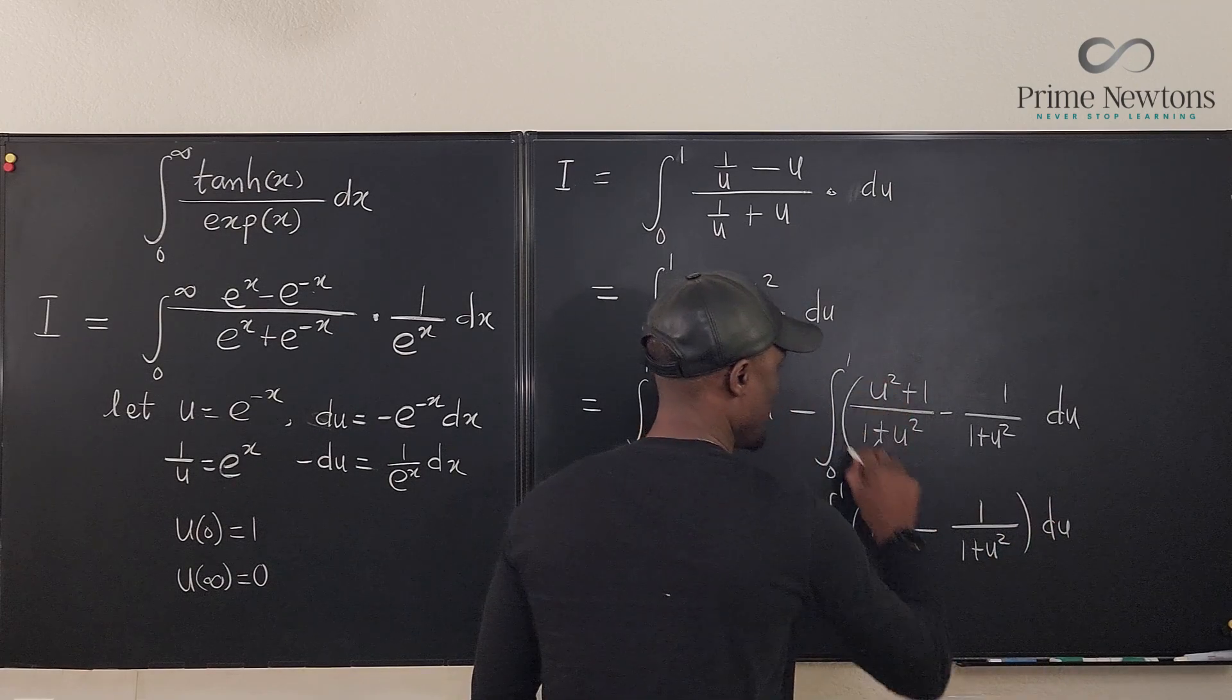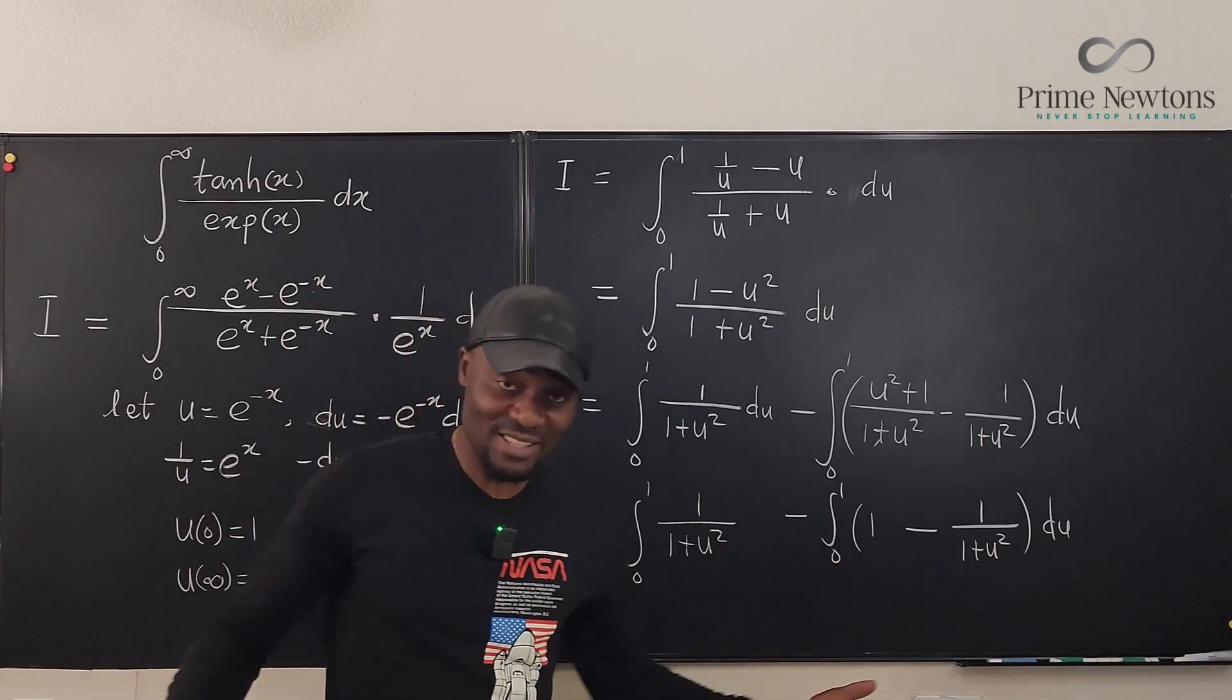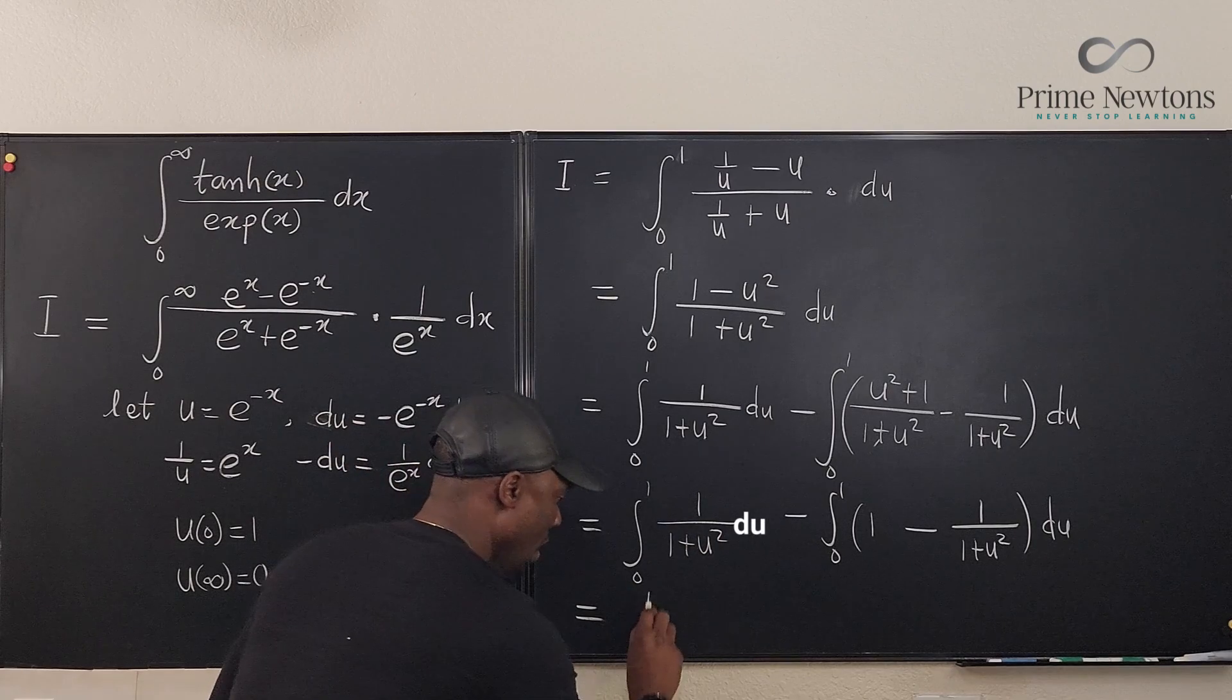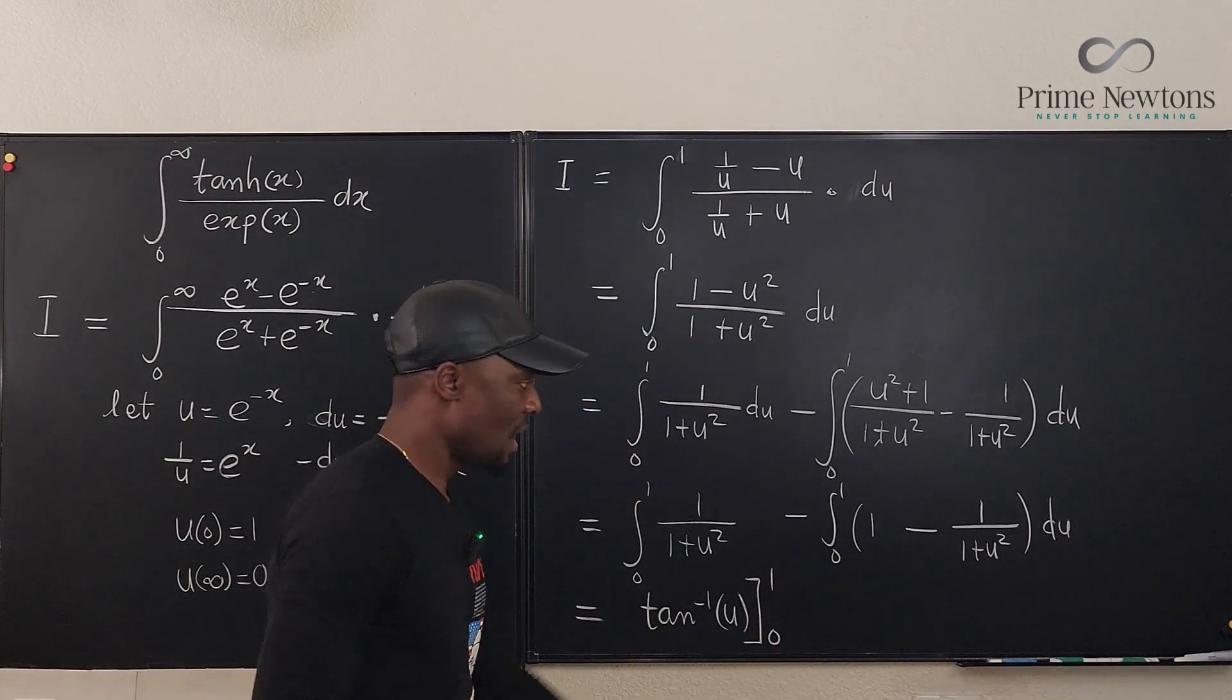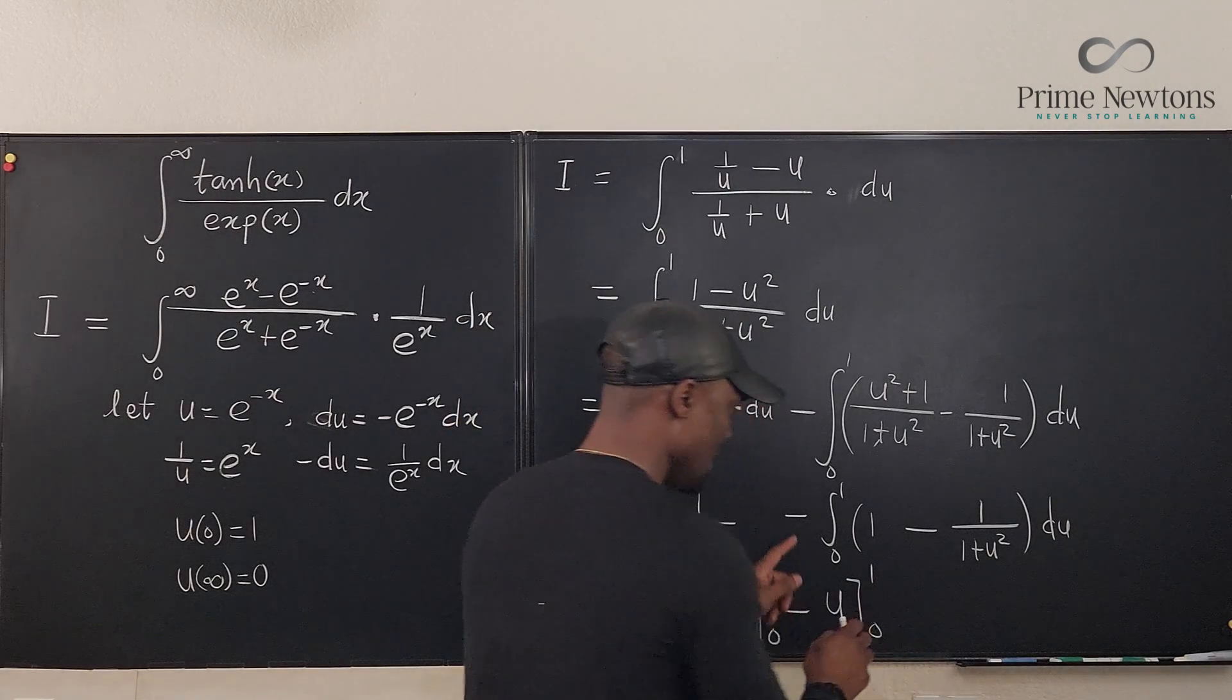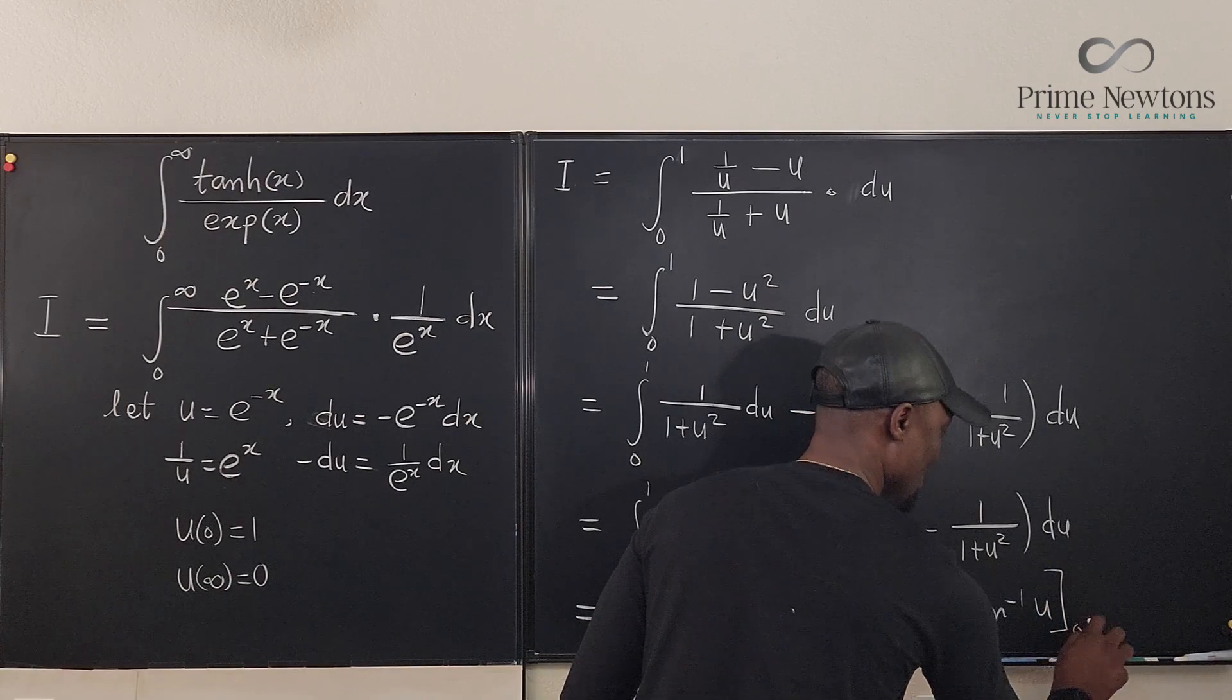So we have minus integral from zero to one of one minus one over one plus u squared du, all of this under the integral sign. And this will be zero to one of one over one plus u squared. When I did this the first time, I had these two together. I don't know what's going on now, but now they're separated, but let's just finish this. So this would be equal to what's the integral of this is arctangent of u evaluated from zero to one. This minus will change this to a plus, and this is the same thing as arctangent of u evaluated from zero to one.